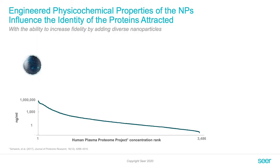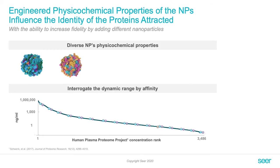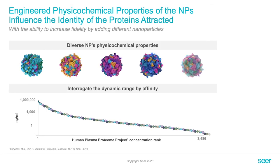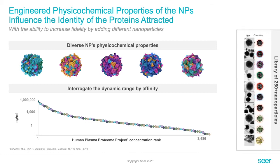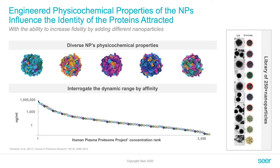When we compare multiple particles, we can interrogate the entire dynamic range, which can easily span more than 10 orders of magnitude, and specifically enrich for proteins that are low abundant and partially deplete proteins that are high abundant, covering the entire richness of information in the proteome. We have a library of more than 250 different nanoparticles characterized for the capability to deeply interrogate the proteome.